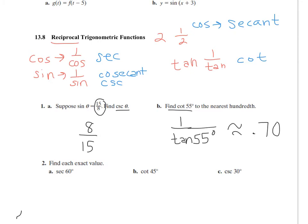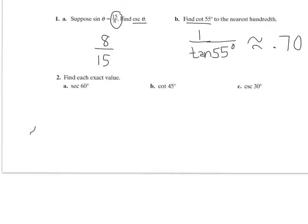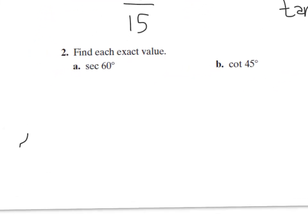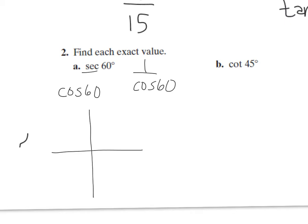And then if you have to find the exact value, secant is the reciprocal of cosine. So I'm going to find the cosine of 60 first, and then do 1 over the cosine of 60. So cosine of 60 is from your unit circle — draw a 60 degree angle.